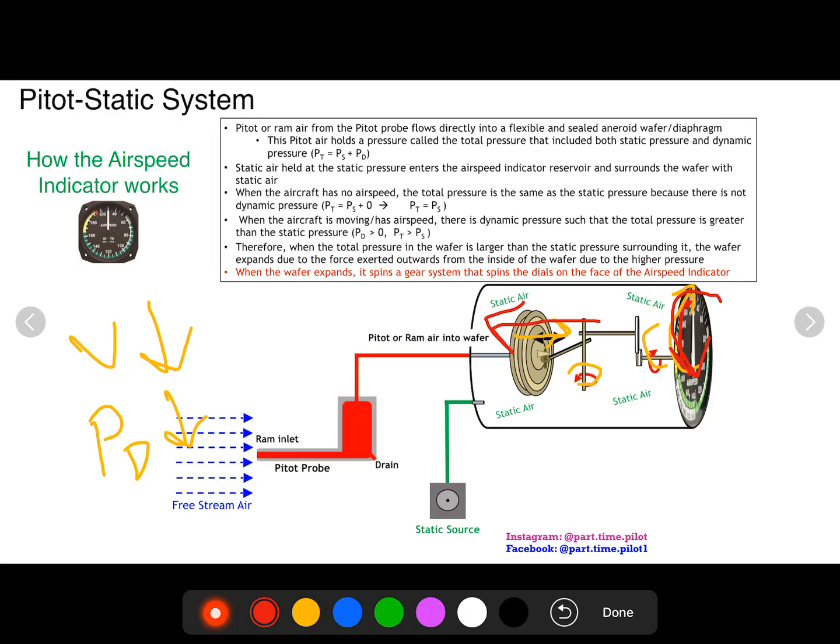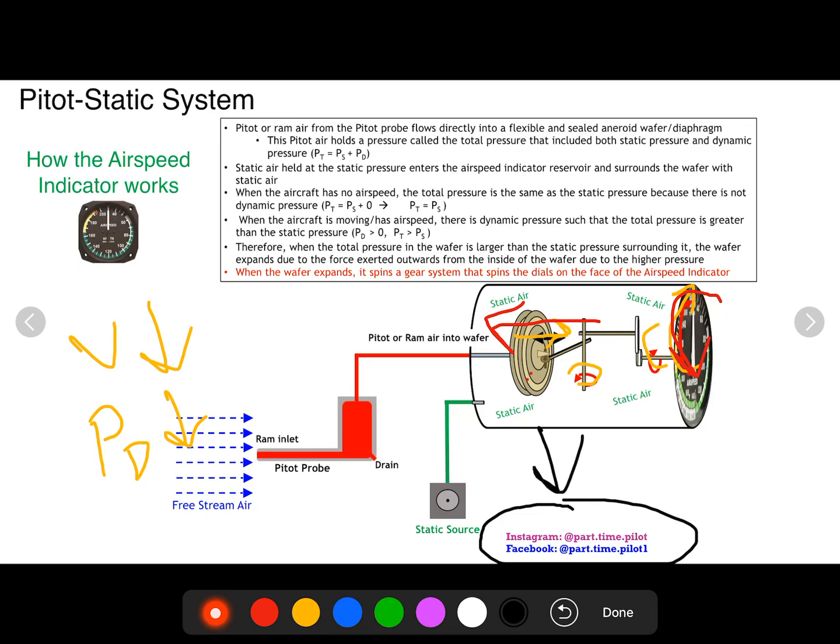The airspeed indicator doesn't do all the math. It just simplifies it using these wafers and the difference to calculate the difference of the static source and the pitot source. Hopefully that made sense to all of you. Please subscribe to my channel. We're going to go over the vertical speed indicator next, and I have a lot more videos planned that will hopefully help you on your journey to become a private pilot. And please subscribe to me on Instagram as well at part.time.pilot. I hope everyone has a great day. Thank you.